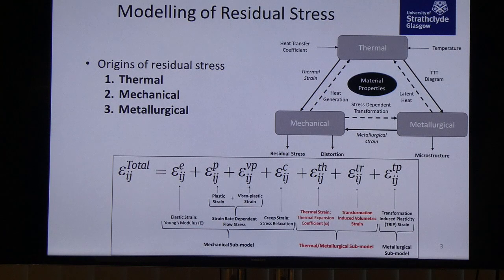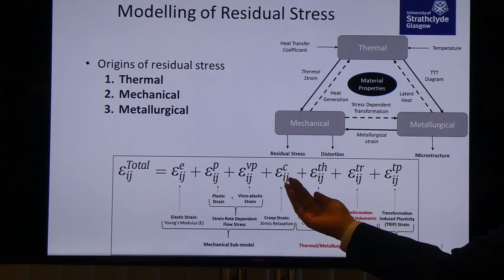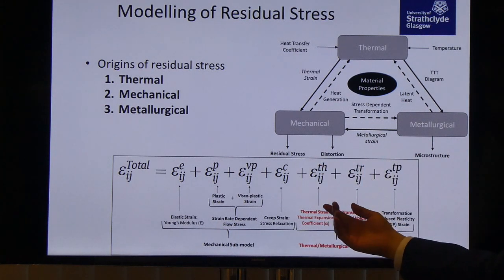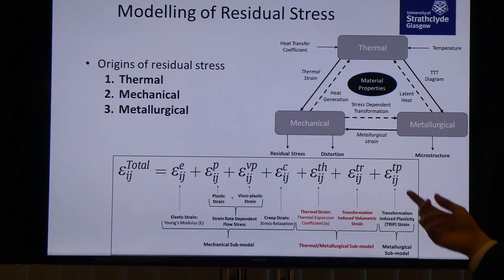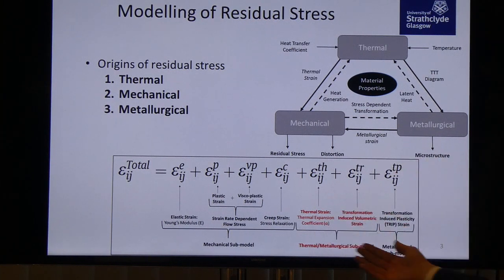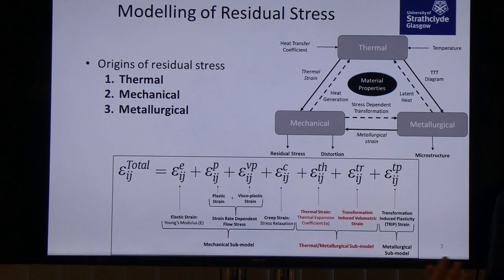The residual stress is computed usually through infinitesimal strain theory, where strain is decomposed into a number of components. The mechanical sub-model is comprised of creep strain, viscoplastic and plastic strain, and elastic strain. The thermal model looks at thermally induced strains, and some people consider transformation-induced volumetric strain within this model. The metallurgical sub-model addresses transformation-induced plasticity strain, which hasn't been investigated in much detail for titanium alloys.